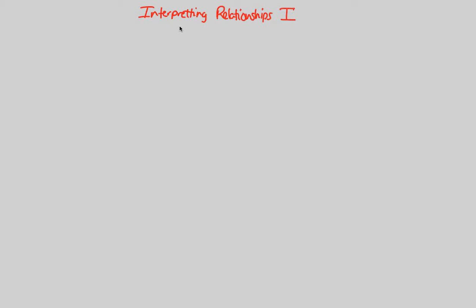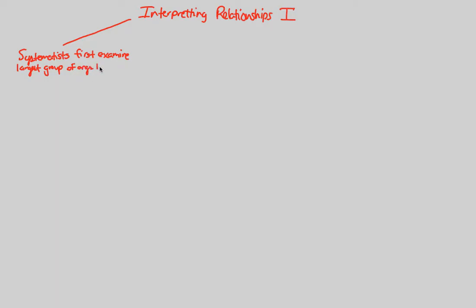When we want to look at an evolutionary relationship, a systematist — that's the person who studies systematics — first and foremost has to start somewhere. They have to start and examine on a broad scale, examining the largest group of organisms being studied. So they start off big, and from that big starting point, they're going to start working their way more and more specific to begin the interpretation.